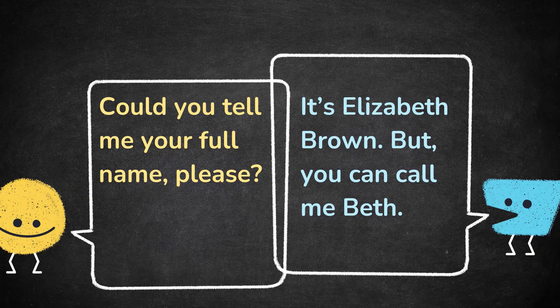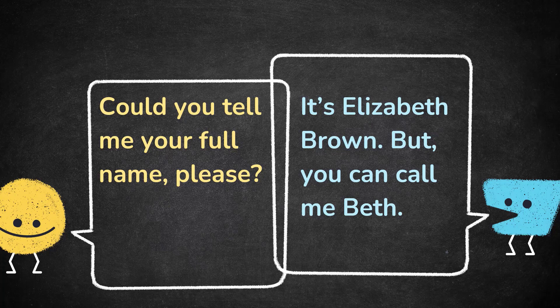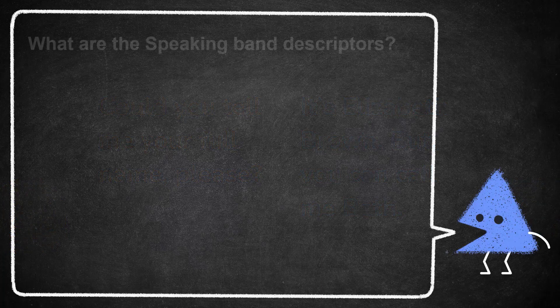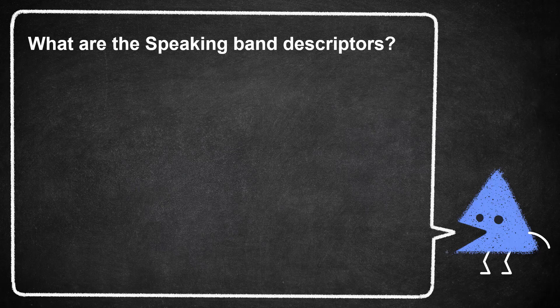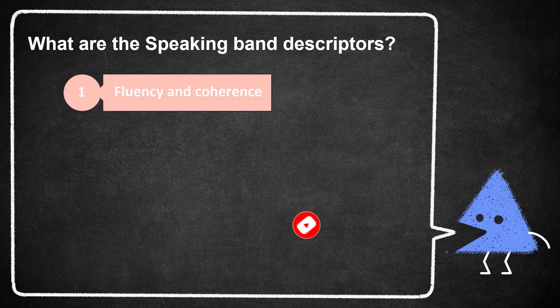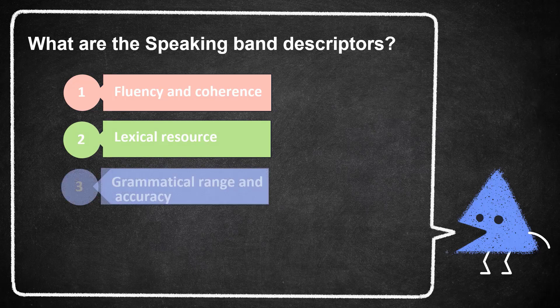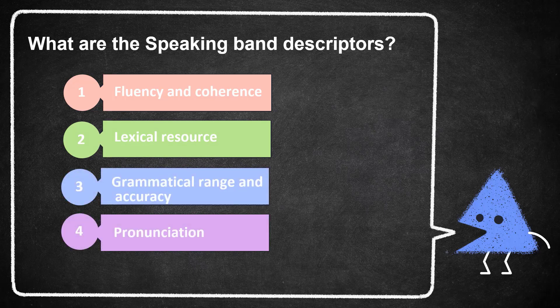The IELTS speaking test is a face-to-face interview where the examiner evaluates your answer according to four criteria. These four criteria are called the speaking band descriptors, which you should know to be well prepared for the test. Now I'll walk you through these band descriptors: fluency and coherence, lexical resource, grammatical range and accuracy, and pronunciation.